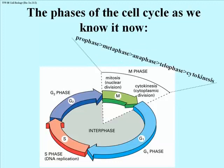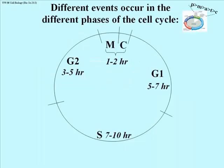This is from your textbook — the phases of the cell cycle as we know them now. It includes prophase, metaphase, anaphase, telophase, and cytokinesis as part of the M-phase. This is not temporally to scale. The generation time shown here is roughly 18 to 25 hours, though cells can grow more rapidly or slowly. As you can see, mitosis and cytokinesis lasting 1 to 2 hours is the shortest period in the life of a cell.